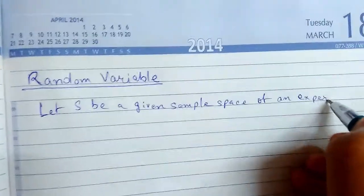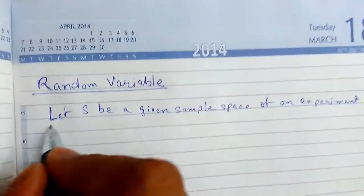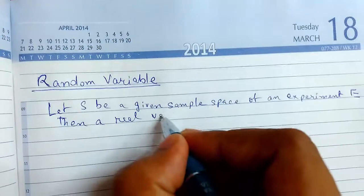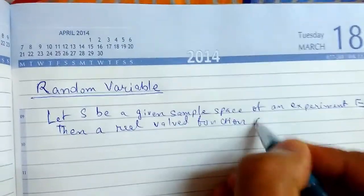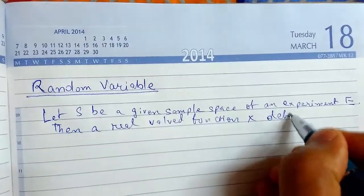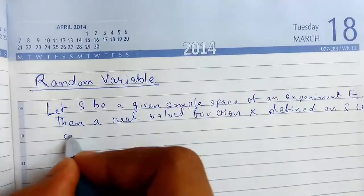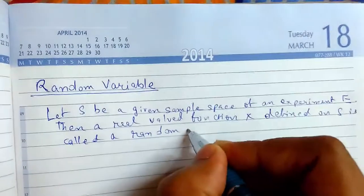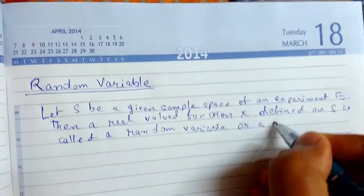Then a real valued function, that is function x defined on S, is called a random variable or a stochastic variable.